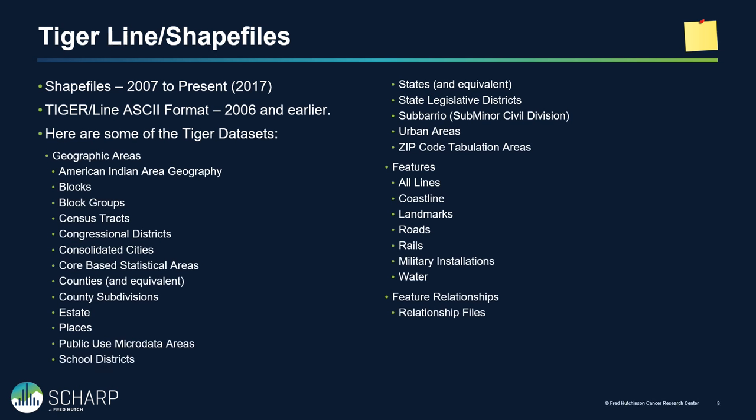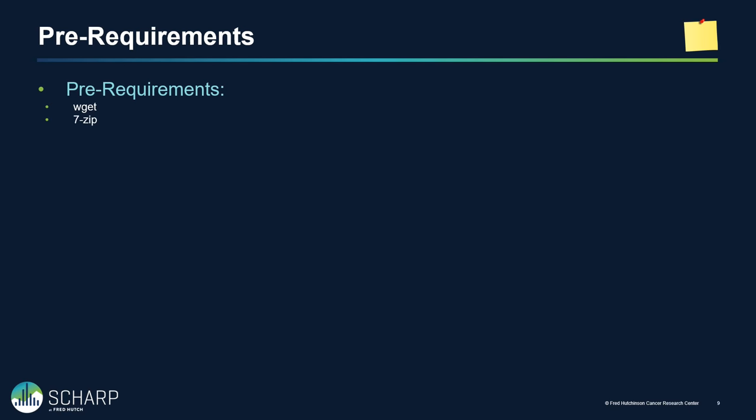The Census Bureau provides many types of shapefiles for free. The areas I'll use in this example are state equivalents and counties, but you can also get zip codes, roads, railways, and more. There are some differences between the TIGER shapefiles for states and counties versus the world data set — I'll show that visually later. Currently only 2017 data is available; the 2018 data hasn't been published yet. To get this data you'll need wget and 7-zip.